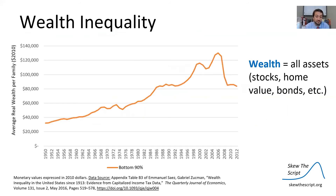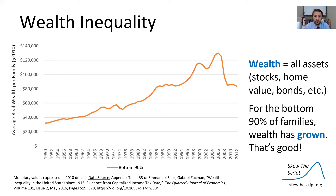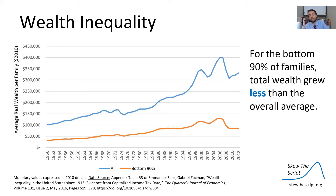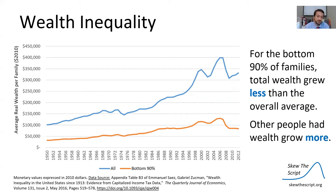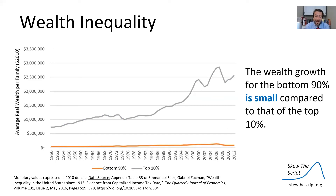Now let's turn to exponential patterns and spread, returning to our original query of wealth inequality. We define wealth as all assets — stocks, home value, bonds, etc. Our chart gives us the bottom 90% of wealth over time for American families. You can see that for the bottom 90% of families, wealth has grown, which is a good thing. However, adding the blue line showing all families, you can see the orange line — the bottom 90% — grew less than the overall average, meaning other people outside the bottom 90% had their wealth grow more.